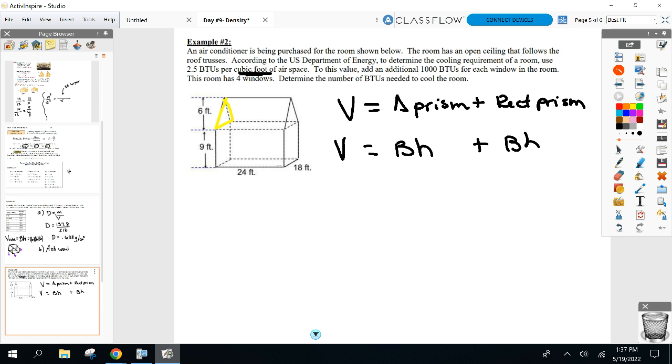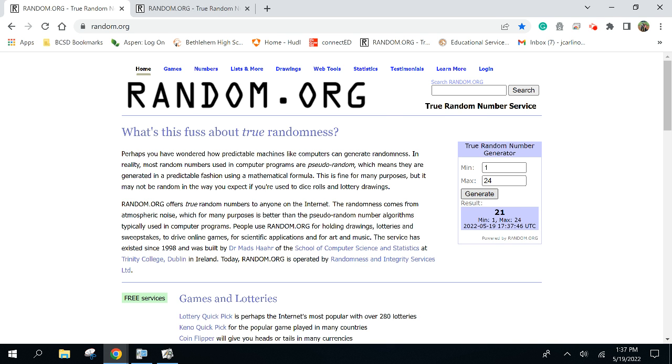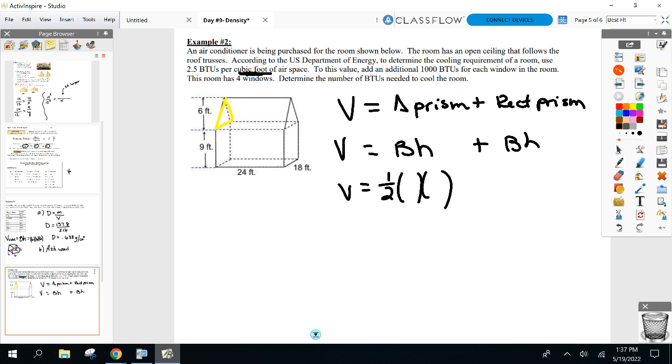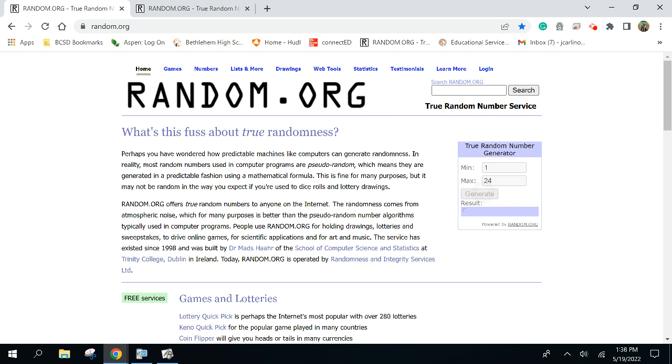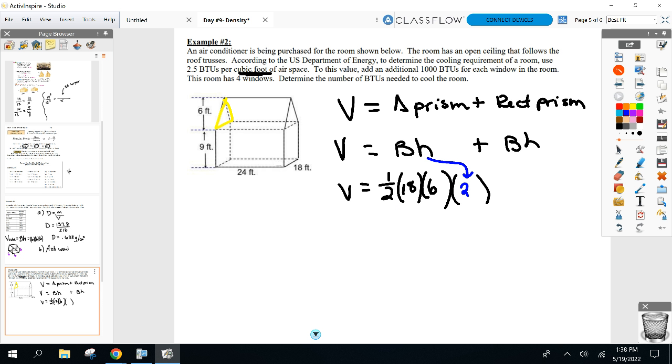Can somebody give me those two numbers? What's the base and the height of that triangle? 18 and 6, good work. Here's where I got to slow down. That's just capital B, isn't it? Now I still got to multiply by this h. What's that h represent? The height of the triangular prism. What's the height of this triangular prism? 24, good work.